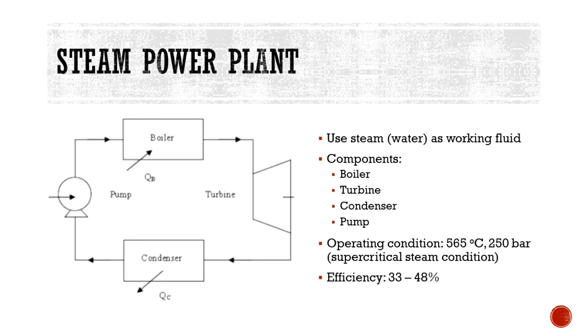The normal operating condition for steam power plant is at 565 degrees Celsius and 250 bar, which they call supercritical steam condition. The overall efficiency of steam power plant is at the range of 33% to 48% based on the report in Wikipedia.